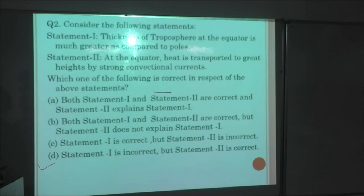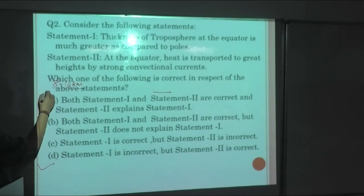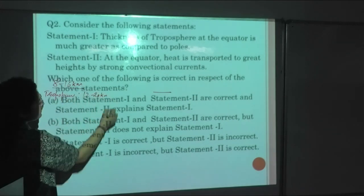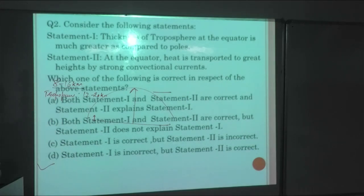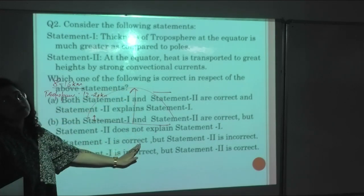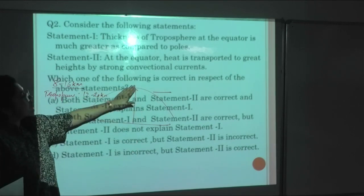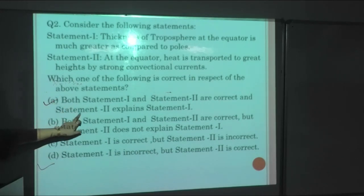Statement 2: At the equator, heat is transported to greater heights by strong convectional currents. Which of the following statement is correct? It is talking about troposphere. The thickness varies from 8 to 16 km at the poles, and varies from 12 to 20 km at the equator. Heat is transported to a greater height by strong convectional currents. Both the statements are correct, and statement 2 explains statement 1 well. So option A is the correct.